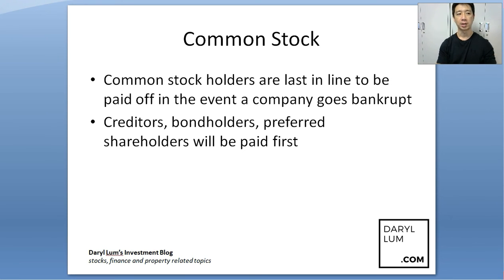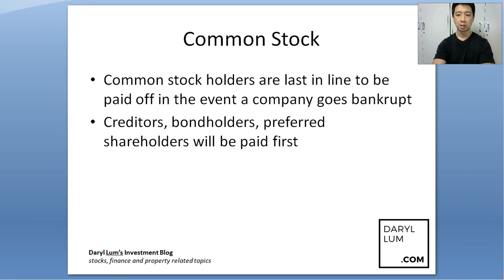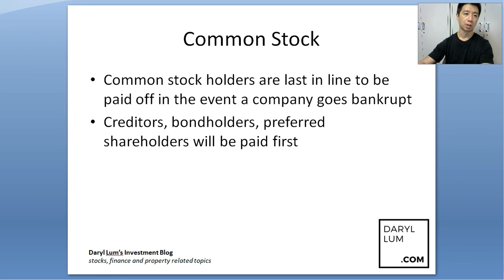However, common stockholders are last in line to be paid off if a company goes bankrupt. First, you pay off the creditors — all the people the company owes money to. Next, you pay off the bondholders. After that, you pay off the preferred shareholders, and only then do you pay off the common stockholders. The same priority applies when paying out dividends — preferred shareholders are paid first.